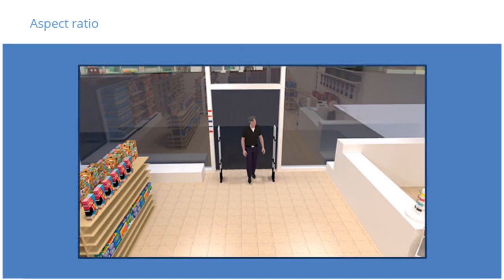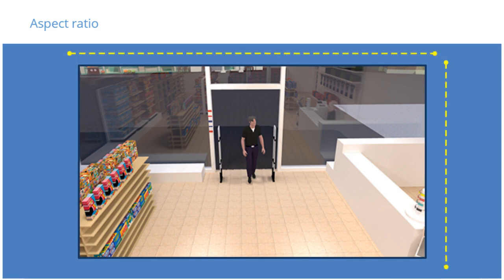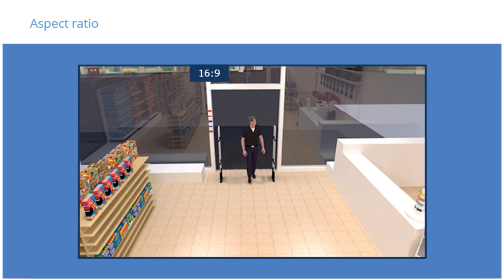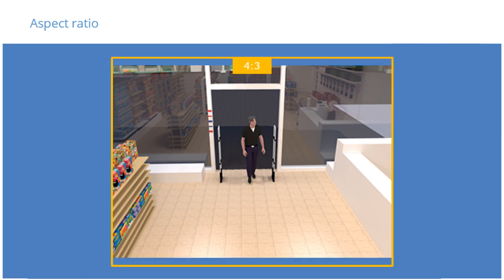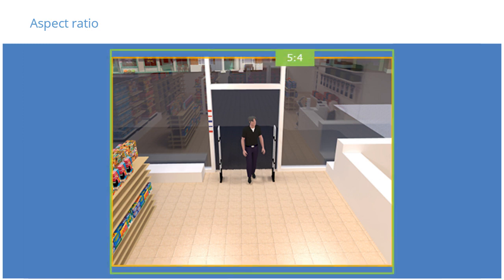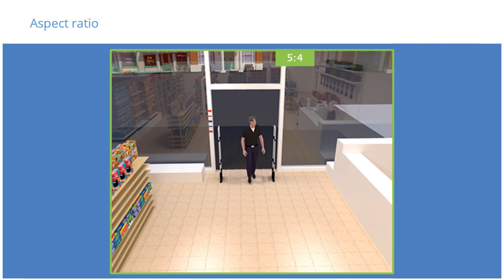Now let's talk about aspect ratio. The ratio of horizontal resolution to vertical resolution of an image is called the aspect ratio. Common aspect ratios include 16x9, 4x3, and 5x4. A 16x9 aspect ratio, like the one seen here, has the majority of the field of view focused on the horizontal axis, with less video recorded in the top and bottom portions of the image. A 4x3 aspect ratio has a taller field of view and shows more of the image at the top and bottom compared to 16x9. A 5x4 aspect ratio has a taller field of view and shows more of the image at the top and bottom compared to 4x3.